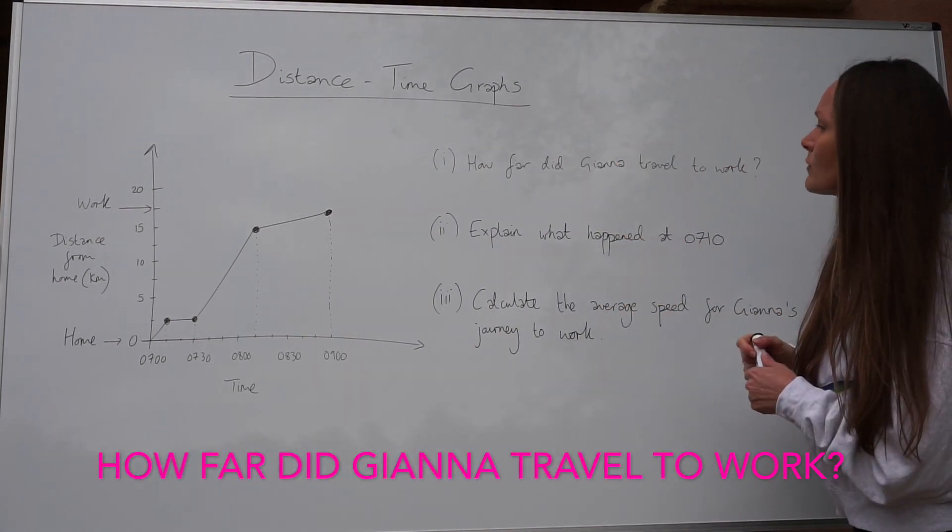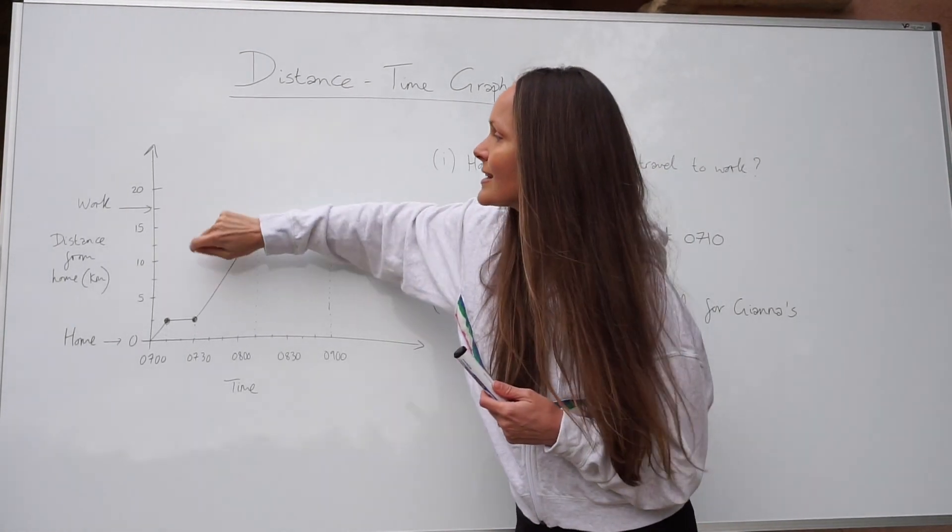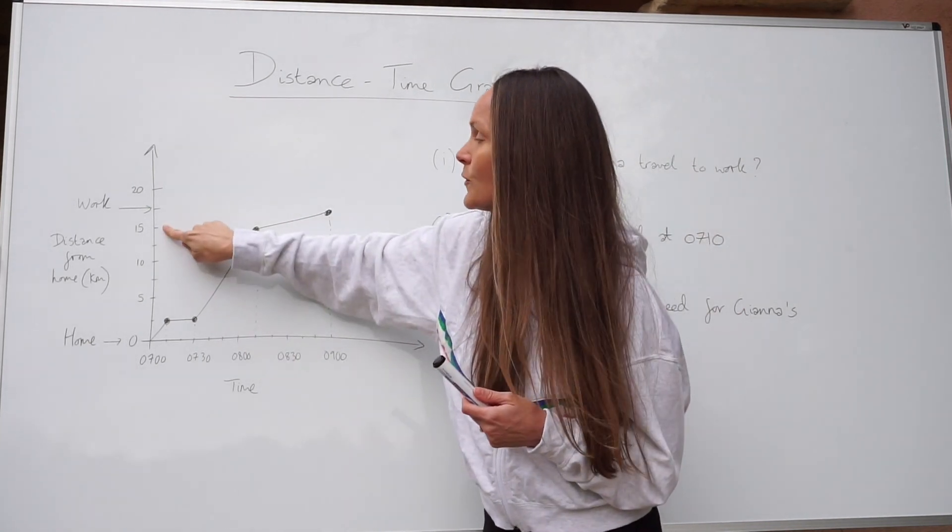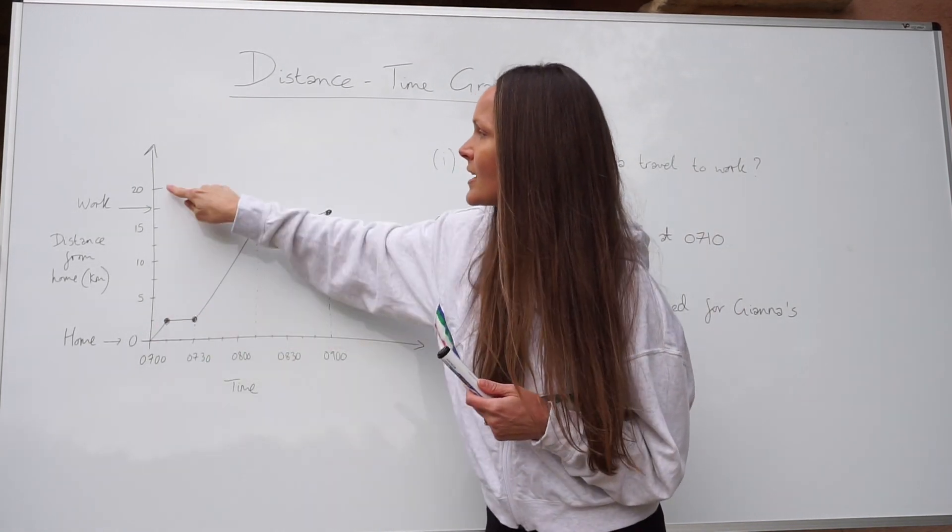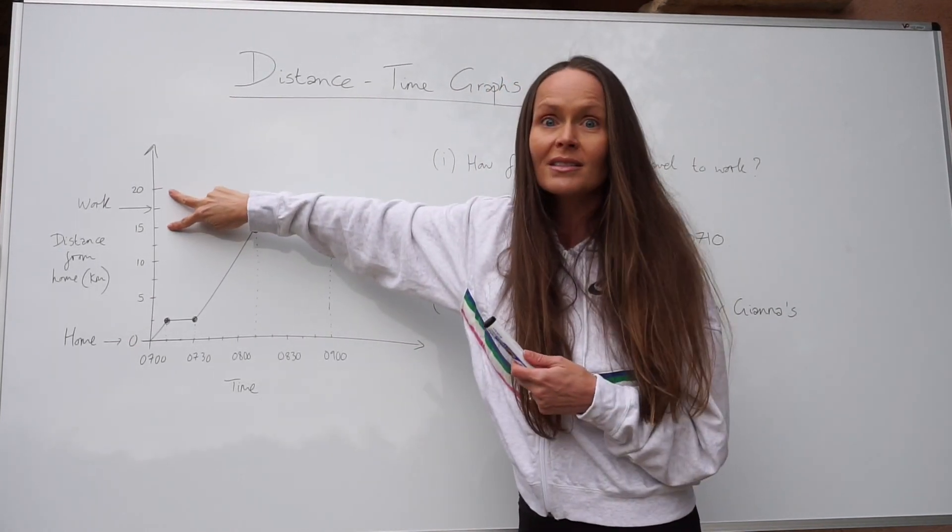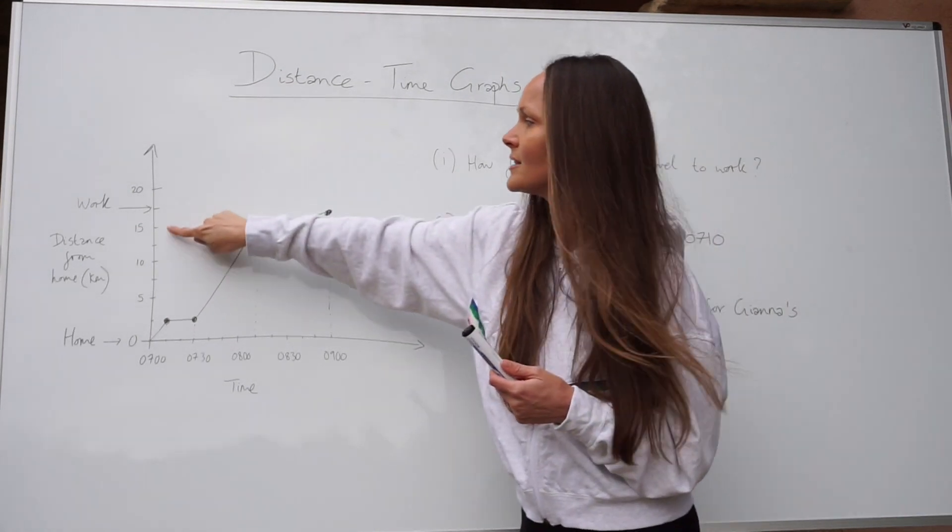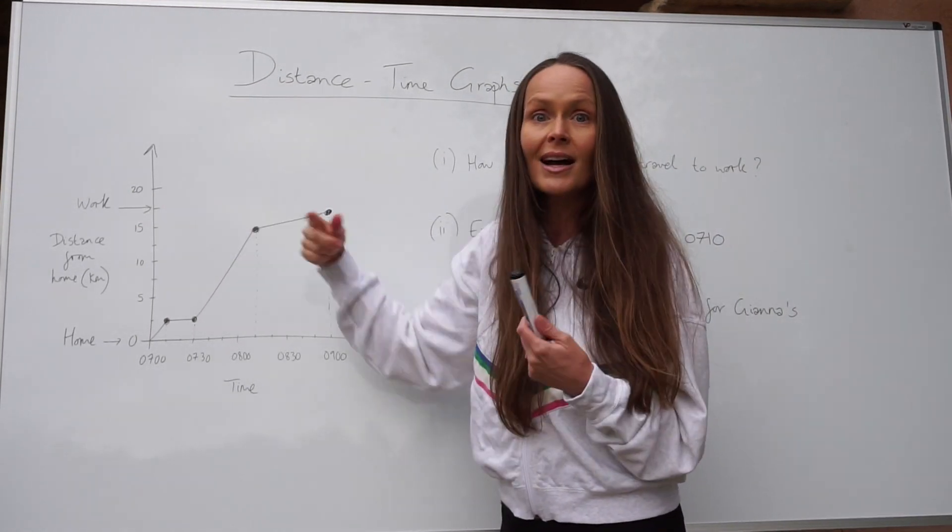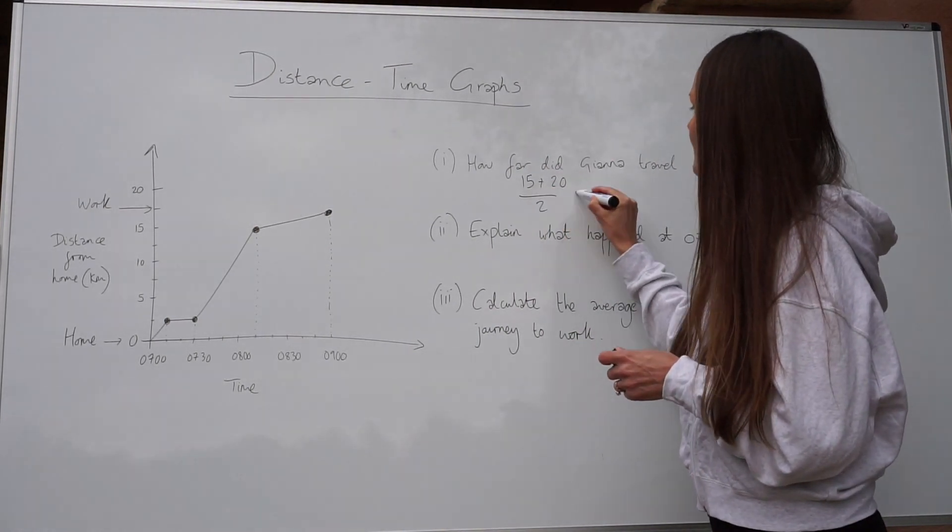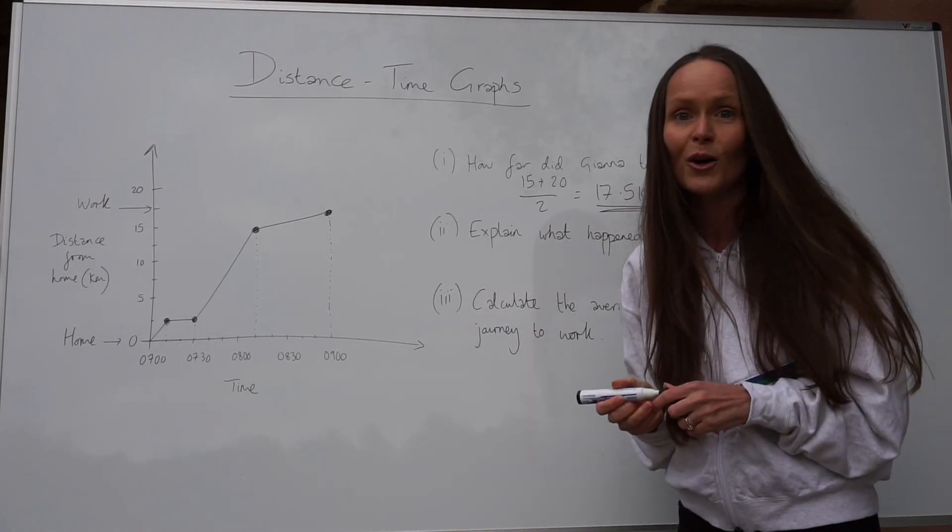So how far did Gianna travel to work? Well, we can see work is labeled on the graph and it's labeled halfway between the number 15 and the number 20. So this means 15 kilometers from home and 20 kilometers from home. So halfway between these two numbers is just 17.5. If you're not sure how to work that out, you would just add 15 and 20 together and divide by two. And when you do that, you get 17.5 kilometers. That's how far she travels to work.